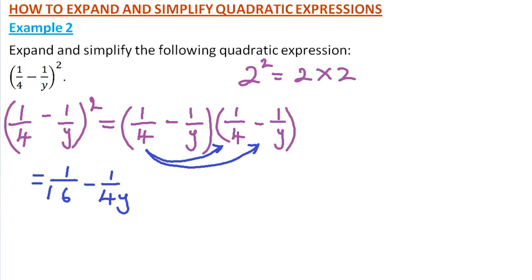From there, we now multiply minus 1 over y, we multiply by 1 over 4, and that is going to give us 1 over 4y. Then again, we multiply minus 1 over y, multiply by minus 1 over y. So minus and minus changes to positive, so we have plus 1 divided by y squared.